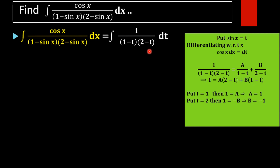And 2 minus sin x as 2 minus t. Now this function is not in an integrable form. In order to make this function into an integrable form, we are using the method of partial fraction — that is, we are going to separate this function by using partial fractions. So by the method of partial fraction, we can rewrite 1 by (1 minus t) into (2 minus t) equal to A by (1 minus t) plus B by (2 minus t).